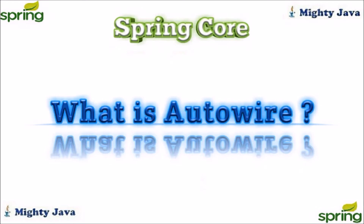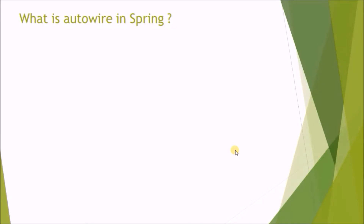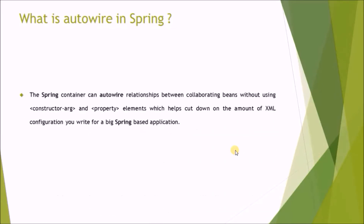In this video, we will see what is autowire in Spring. The Spring container can autowire relationships between collaborating beans without using constructor-arg and property elements, which helps cut down on the amount of XML configuration you write for a big Spring-based application.